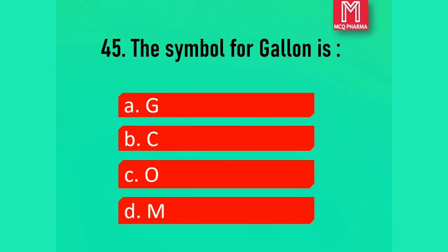Question number 45. The symbol for gallon is: Option A, G. Option B, C. Option C, O. Option D, M. Correct answer: Option B, C. The symbol of imperial standard gallon is also Option B, C.